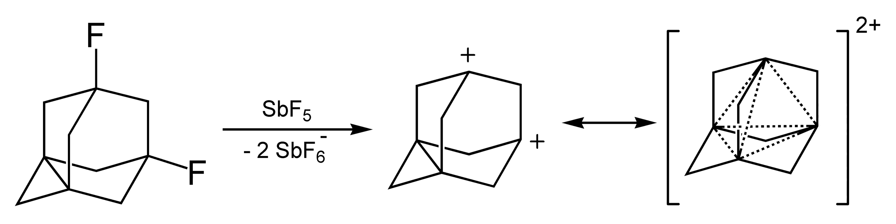Many organic dications can be detected in mass spectrometry, for example CH4+2, a CH2 complex, and the acetylene dication C2H2+2. The adamantyl dication has been synthesized.